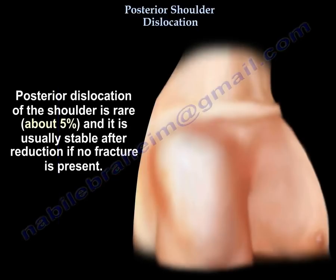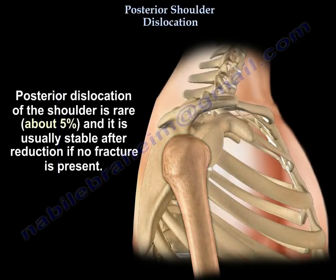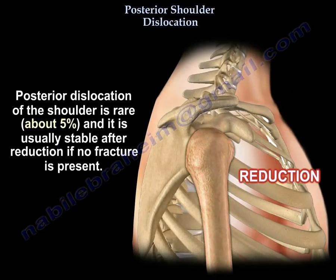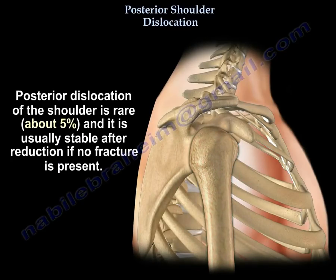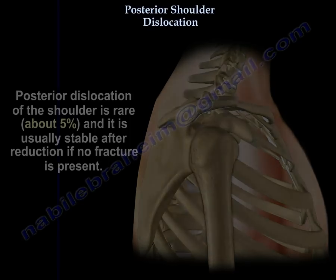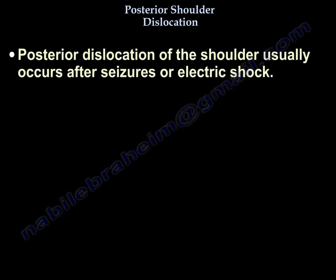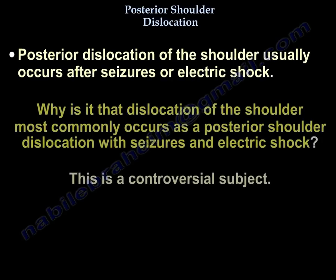Posterior dislocation of the shoulder is rare — about five percent — and it is usually stable after reduction if no fracture is present. Posterior dislocation of the shoulder usually occurs after seizures or electric shock. Why does shoulder dislocation most commonly go posteriorly in seizures and electric shock?